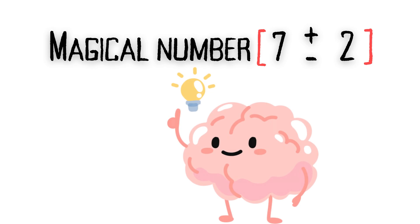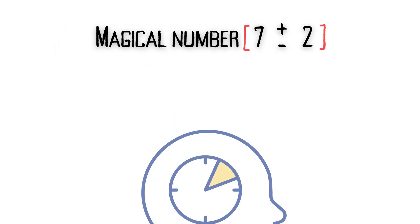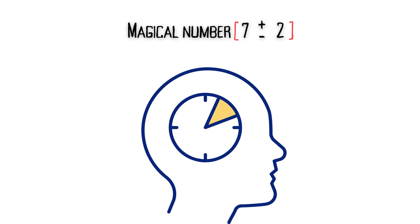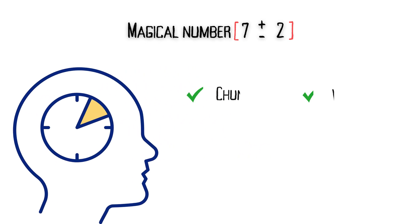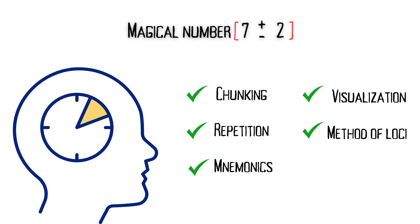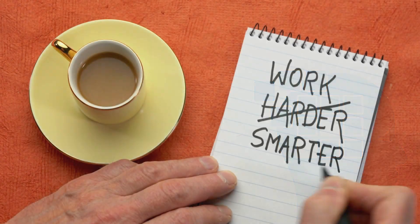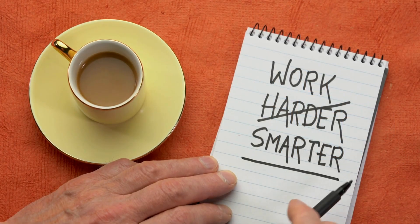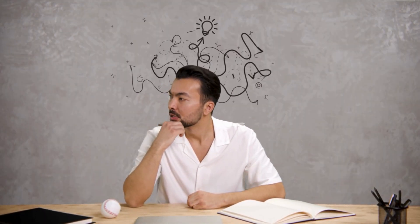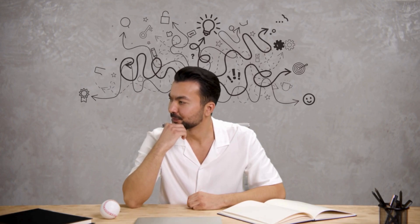In essence, understanding George Miller's magic number seven theory helps us optimize how we use memory techniques. By respecting the limits of our short-term memory and employing strategies like chunking, mnemonics, and visualization, we can enhance our ability to learn, remember, and recall information effectively. Remember, the key to effective learning is not just working harder, but also working smarter. Use these strategies to make the most of your brain's natural capabilities, and you'll be amazed at what you can achieve.